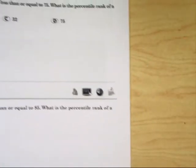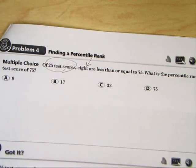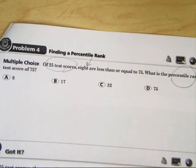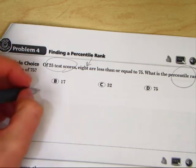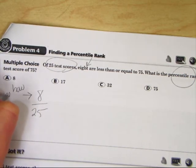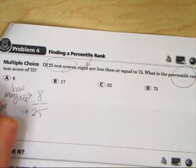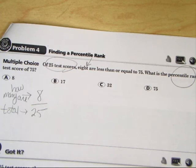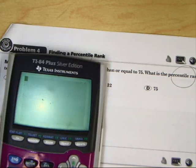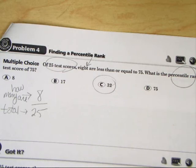It says if you have 25 test scores, there they are, 25 test scores, 8 of them are less than or equal to 75. What is the percentile rank of a test score of 75? It's not too hard. What you do is you say 8 out of 25. So you say, how many are 75 or smaller? And this one says, how many total? So all we have to do is find our percent. So we do 8 divided by 25. And we get 32% as our percentile rank.